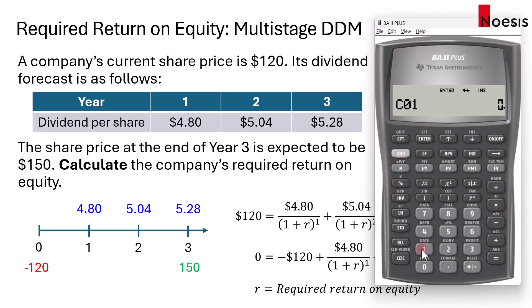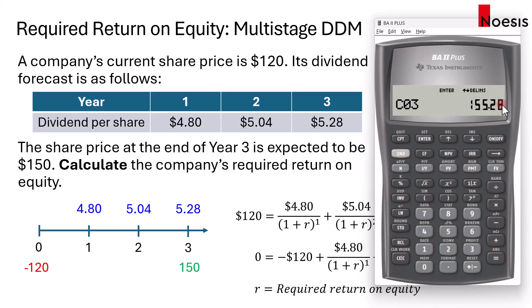Go down to C01 — that would be $4.80 — enter. Going down to C02, that's $5.04, enter. And going down to the third one, you will have to take the dividend in year 3 plus the terminal price of $150, which equals $155.28. Press Enter to save it. Once you're done, it's good to have a quick check to make sure that everything is entered accordingly.